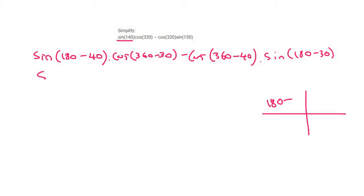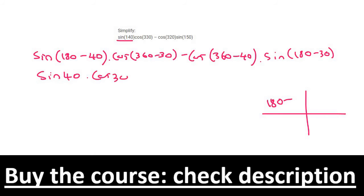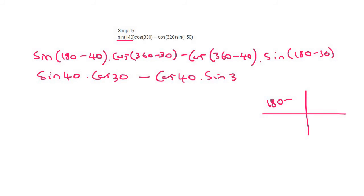Now sin is positive in this quadrant, so it just becomes sin 40. Cos is positive in that quadrant, so it's just cos 30. Cos is positive there, so it's cos 40. And sin is positive, so it's just sin 30.